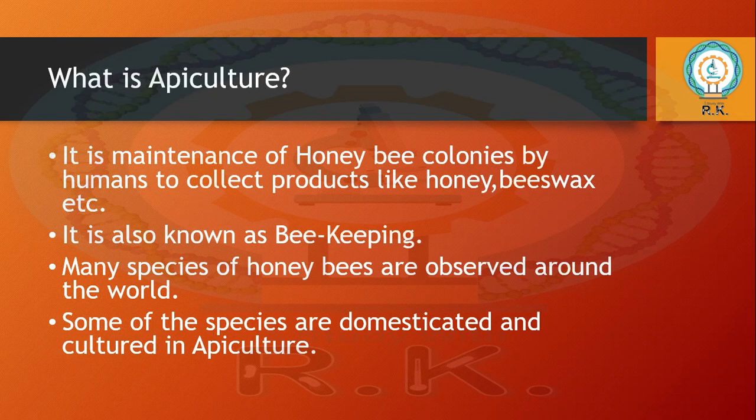The main aim of apiculture is the production of honey, but there are many other things provided along with honey. It is the maintenance of honey bee colonies by humans to collect products like honey, beeswax, and propolis. Apiculture is also known as beekeeping. Many honey bee species are observed around the world.